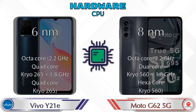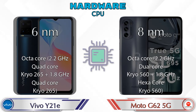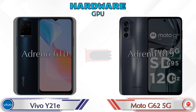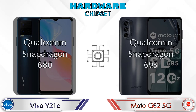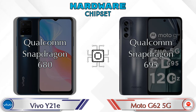First of all, let's see the details about the CPU. Talking about GPU, the Y21e has Adreno 610 and the Moto G62 5G has Adreno 619. Talking about chipset, the Qualcomm Snapdragon 680 is available in the Y21e and the Qualcomm Snapdragon 695 is available in the Moto G62 5G.